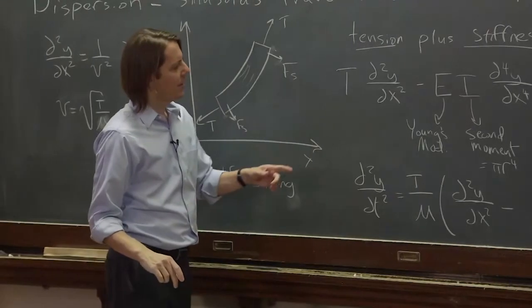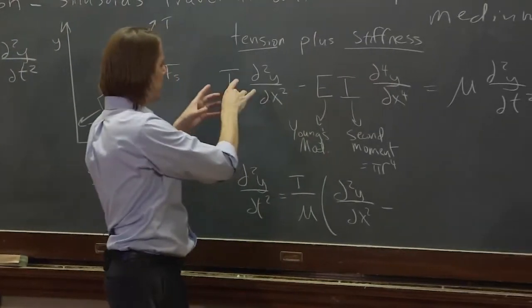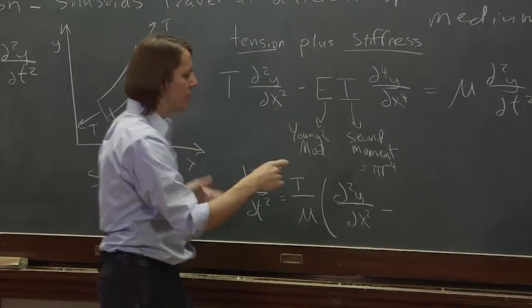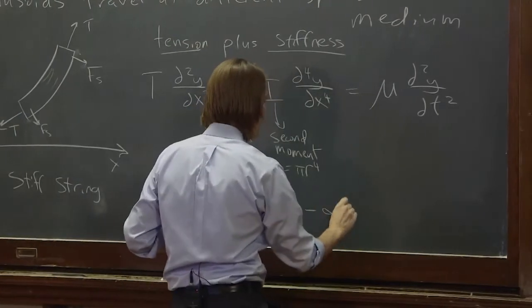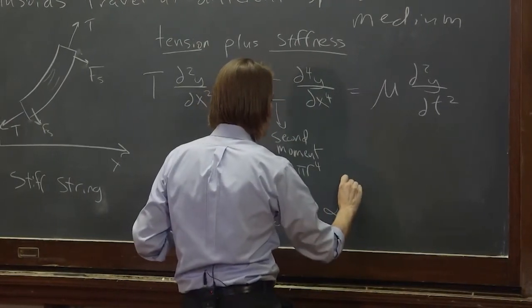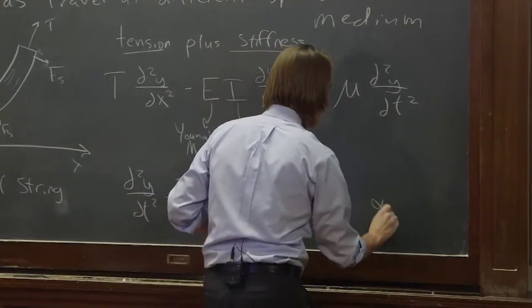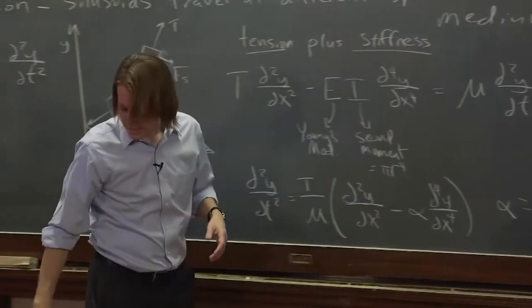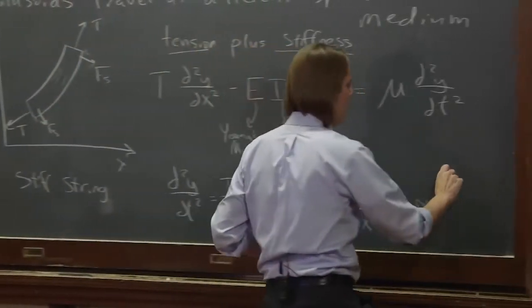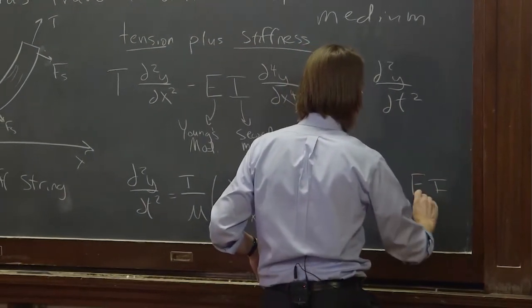And then minus, because we pulled the tension over here and then pulled it out. And minus, we usually just write an alpha here. Alpha d⁴y/dx⁴ where alpha equals EI over T. Alpha is kind of a unitless parameter we'll look at in a minute.